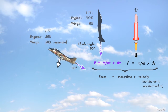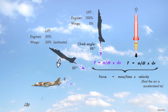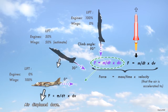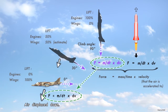The key point is that lift generation shifts from the engines pushing gases down in a vertical climb to the wings pushing air downwards in horizontal flight. But the equation for lift remains the same.